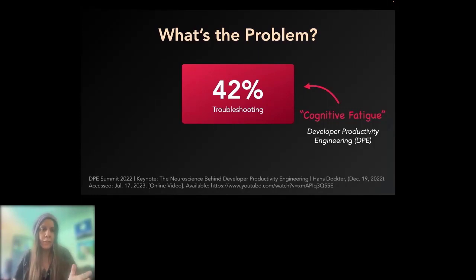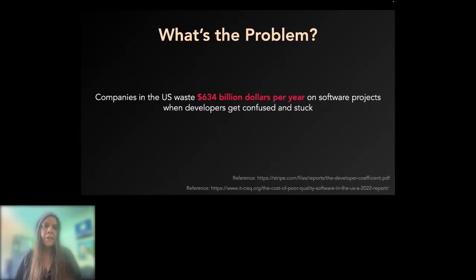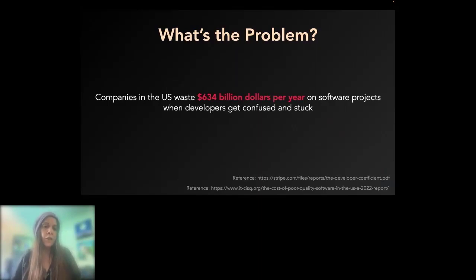Let's put this in economic terms. Companies in the US waste $634 billion per year on software projects when developers get confused and stuck. The impact is huge — the Stripe paper suggests this developer coefficient has a $3 trillion impact on global GDP. But despite the huge impact, because these human factors are invisible, they're hard to measure and hard to explain. Across the industry, this is still one of the biggest challenges we face.